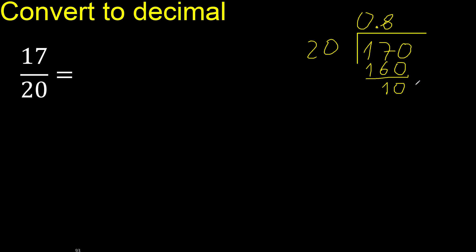There is no number that goes down, therefore complete — always complete with 0. Now 100 divided by 20. Multiply by which number? 20 multiplied by 5 is exactly 100.